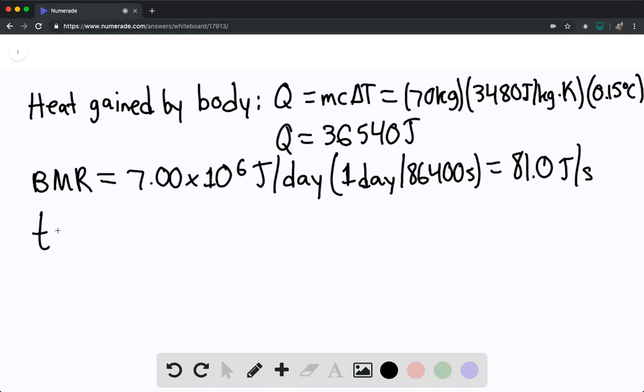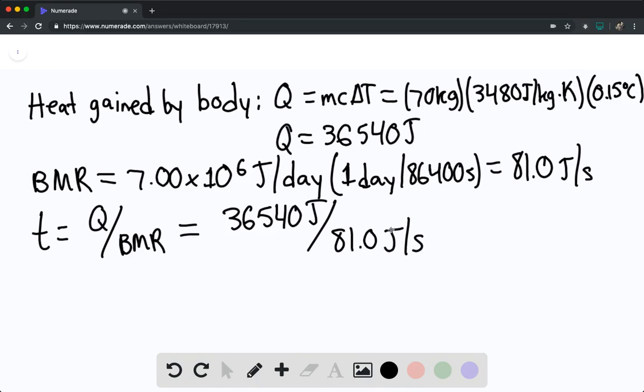The time taken equals Q divided by the power, or in this case, the BMR. This is 36,540 joules divided by 81.0 joules per second, so t equals 451 seconds to reach 37 degrees Celsius again.